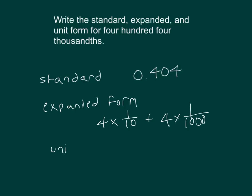The other 4 is in the thousandths place. We would have four-tenths, along with 4 thousandths. That also is equal to 404 thousandths.